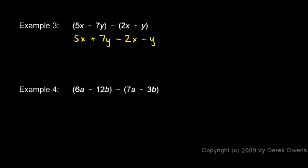Now we can combine like terms. We have 5x and negative 2x. Those combine to give us 3x. And we have 7y and a negative y. Those combine to give us 6y. So 3x plus 6y is our answer.